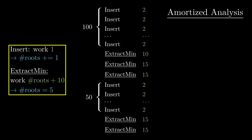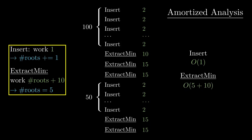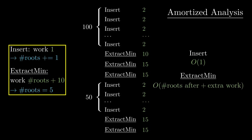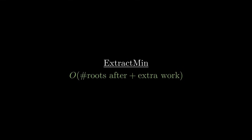With amortized analysis, a single ExtractMin never takes more than 15 time units no matter how many elements were previously inserted. Sure, we need a bit more work per insert, but the total time for each insert remains constant. The numbers 5 and 10 are only stand-ins for the maximum number of trees after each ExtractMin and the extra work per ExtractMin on top of iterating over all roots. This is the actual time needed per ExtractMin if we account for amortization.